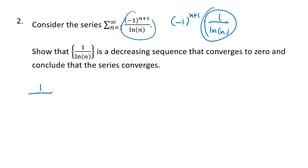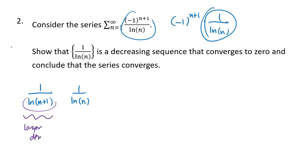To show decreasing, we compare natural log of n plus 1 to natural log of n. Because taking the natural log of a larger number gives a larger result, the fraction 1 over ln(n+1) has a larger denominator, making it a smaller fraction — which is what we want.